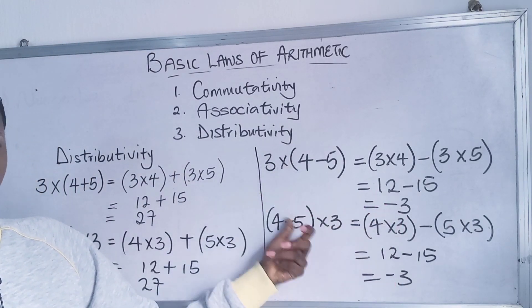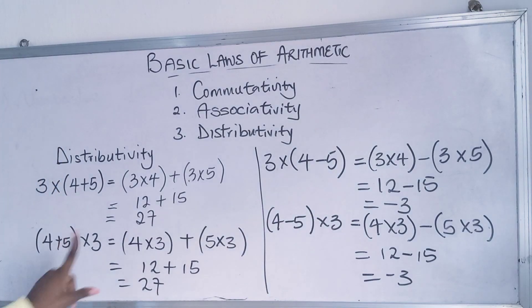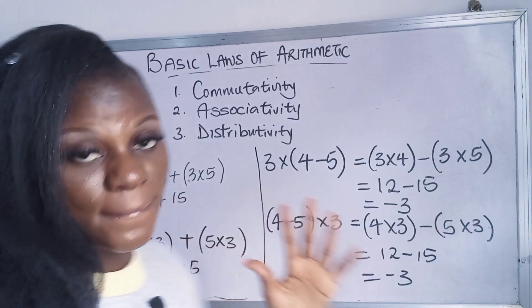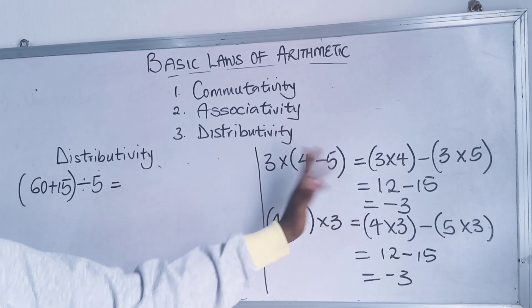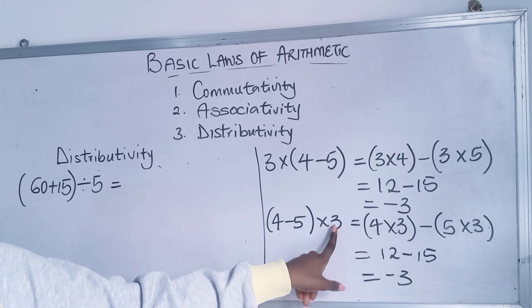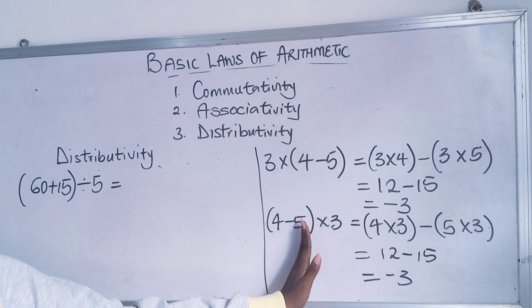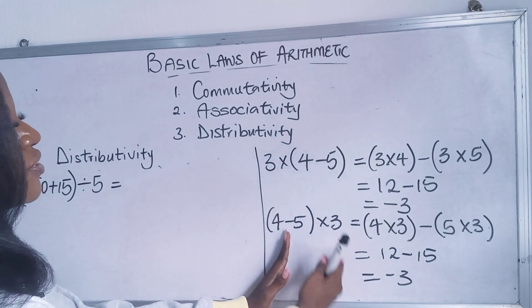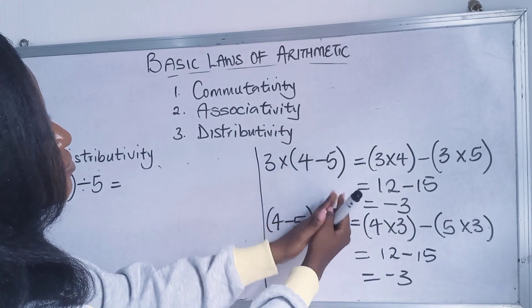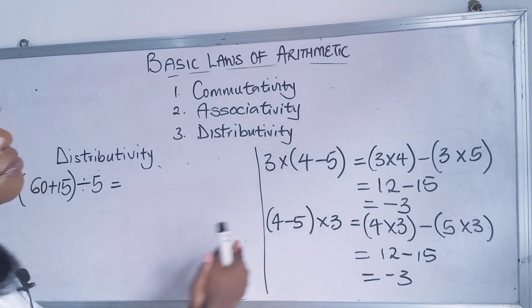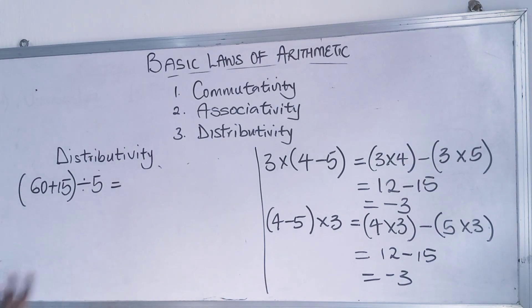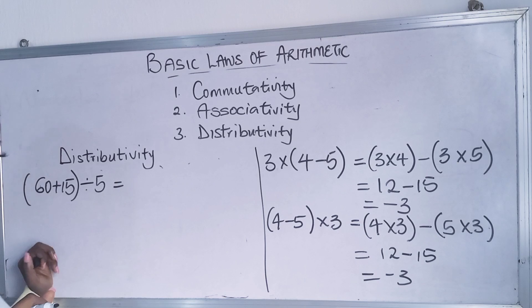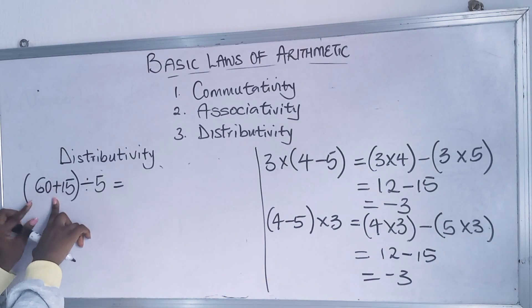So multiplication is distributed over subtraction from the left and from the right. We got minus 3 for both reverse cases of subtraction, and 27 for both reverse cases of addition. Multiplication distributed from the right and from the left gives the same answer whichever way you look at it.